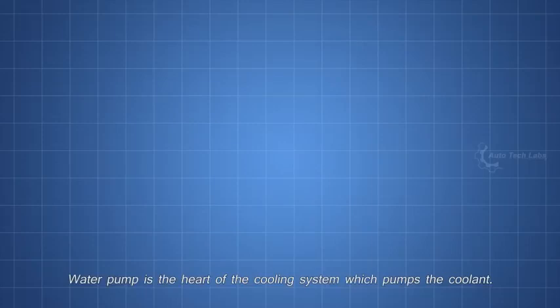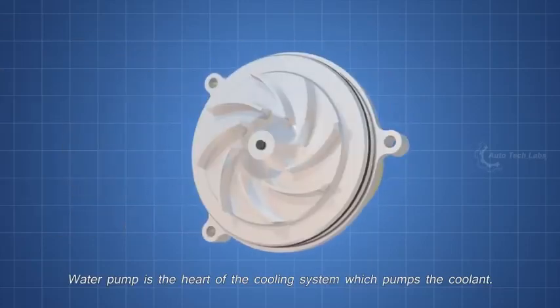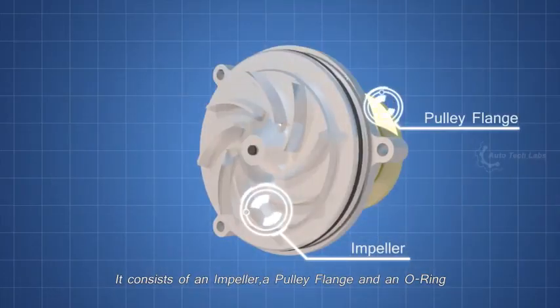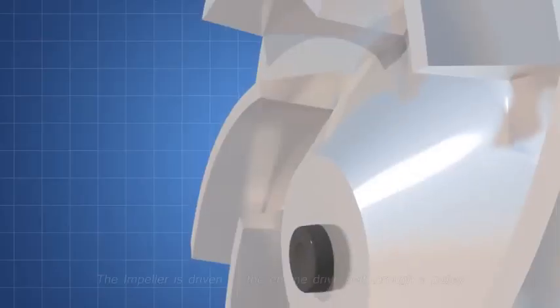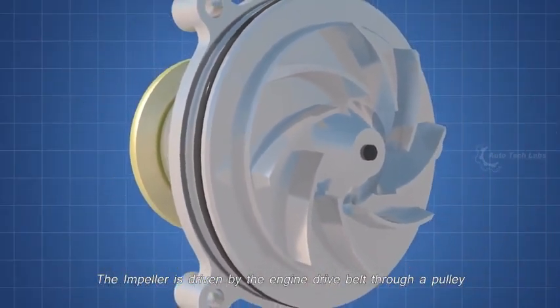First, the water pump. Water pump is the heart of the cooling system, which pumps the coolant. It consists of an impeller, a pulley flange, and a no-ring. The impeller is driven by the engine drive belt through a pulley.